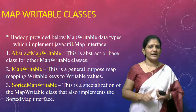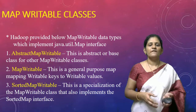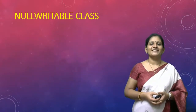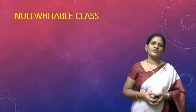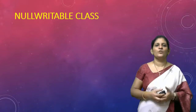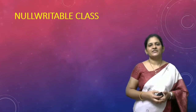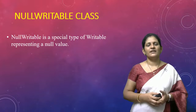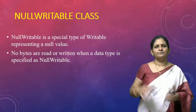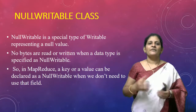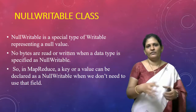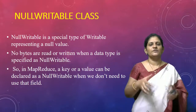We have seen two sets of writable classes: array writables and map writables. Now let's look at NullWritable, which is a very special kind of writable class. Whenever you want to represent a null value, NullWritable is the suitable class to use. When you use NullWritable, no bytes of data are read or written. Also, in MapReduce programming, whenever we don't want to use any key or value fields, we can declare those keys and values as NullWritable.